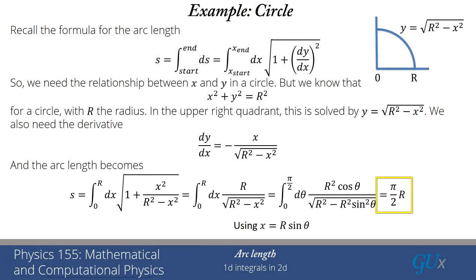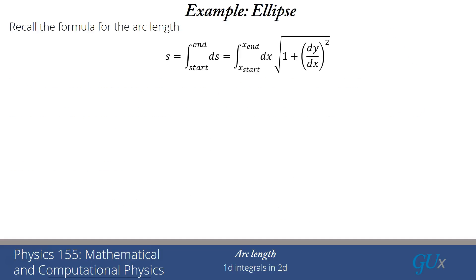So let's think about this — is this actually the correct answer? What we've calculated is one quarter the perimeter of a circle. The perimeter of a circle is pi times the diameter, or two pi r. If I take the answer I got — pi r over two — and multiply it by four, I indeed get two pi r. So it is working.